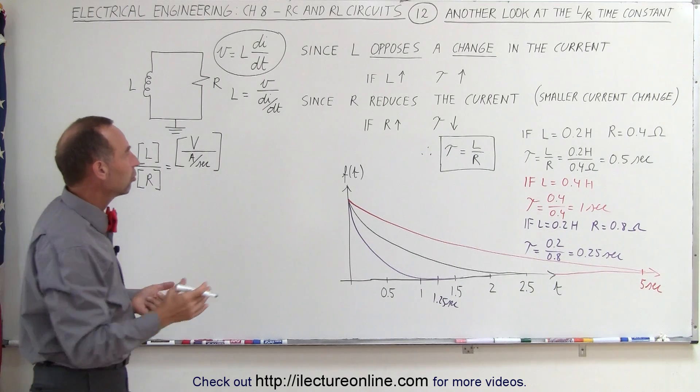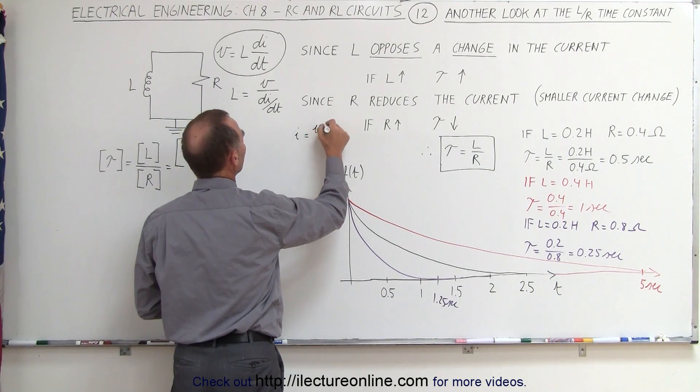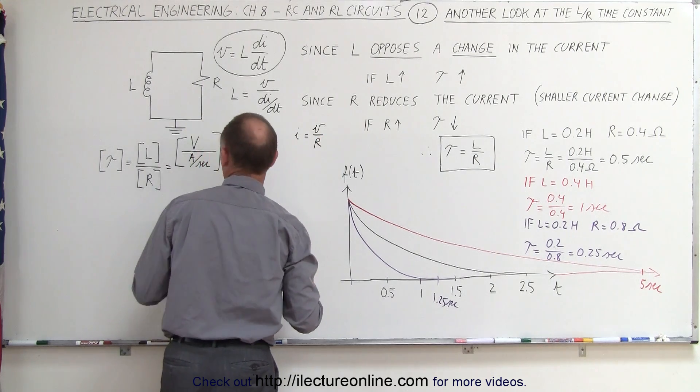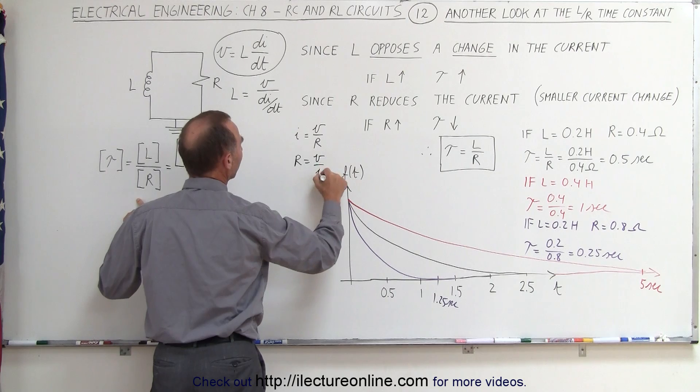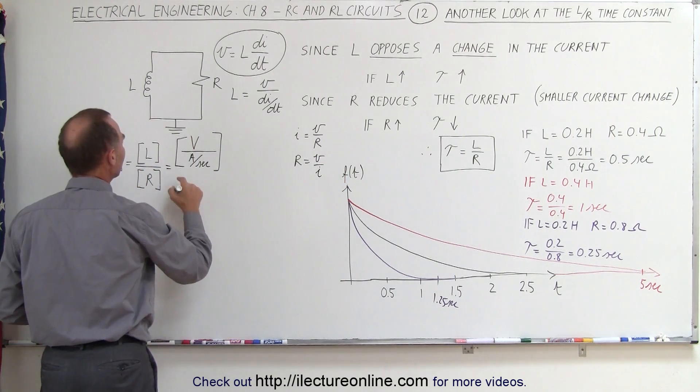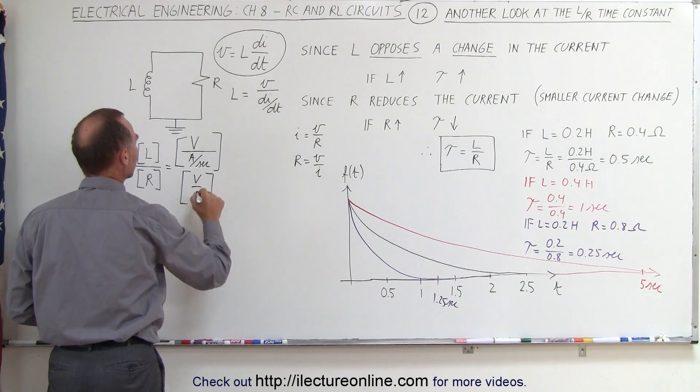Resistance, for that we have to go to Ohm's law. We know that the current I is equal to the voltage divided by the resistance, and so therefore we can say that the resistance is equal to the voltage divided by the current. So in this case, the units of resistance can be written in terms of volts divided by amps.